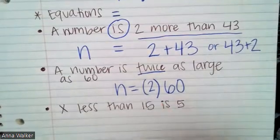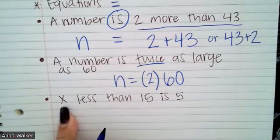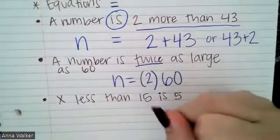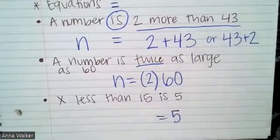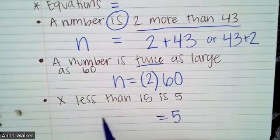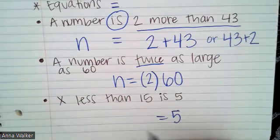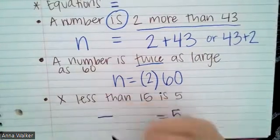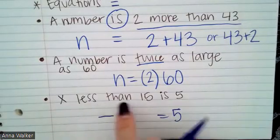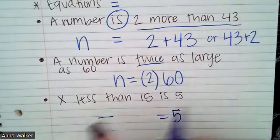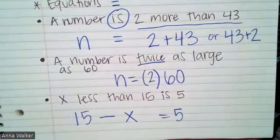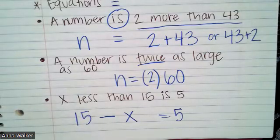Let's look at the last example. We're going to use X this time for our variables. So it says X less than 15 is five. So is five is going to mean equals five. So it's saying some number X less than 15 is five. So we need to determine less than before told us up at the top of our notes that that's subtraction. So we have to determine, is it going to be X minus 15 or 15 minus X? It's saying X less than 15. So that means that X is going to be subtracted from 15. So 15 minus X is equivalent to five. And here we have this equation now set up in the proper order.